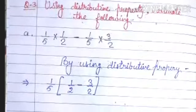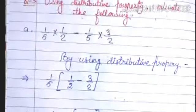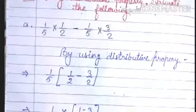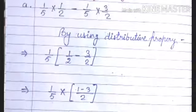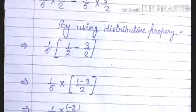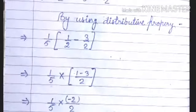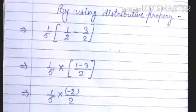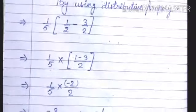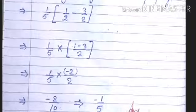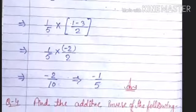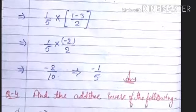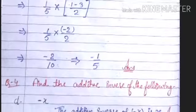Question three: using distributive property, evaluate the following. The first part: one upon five multiplied by one upon two minus one upon five multiplied by three upon two. By using distributive property, we take one upon five common and write in brackets (one upon two minus three upon two). Taking LCM, we get one upon five multiplied by (one minus three) upon two, which gives minus two upon ten, and in simplest form that is minus one upon five.